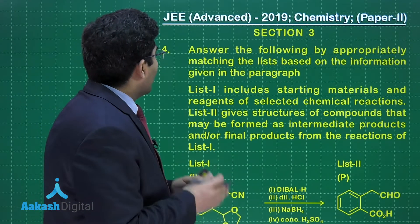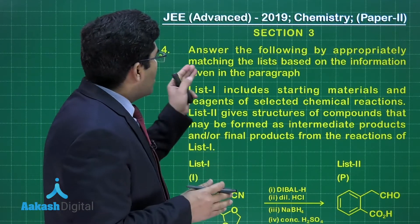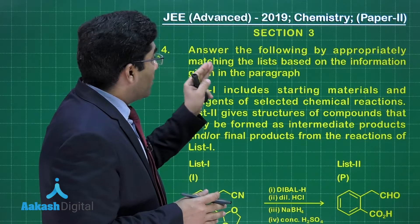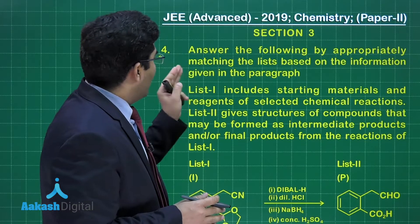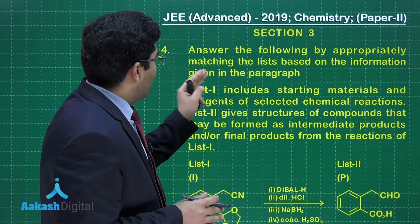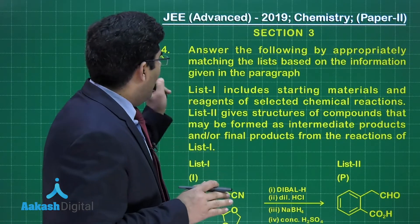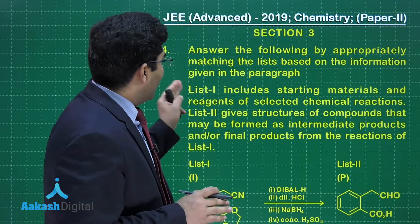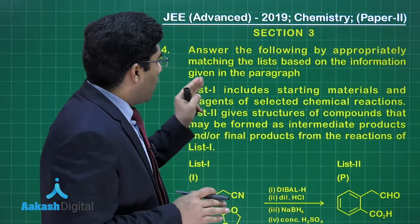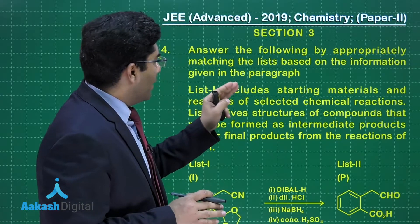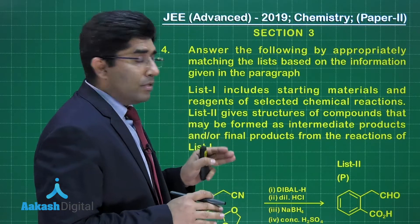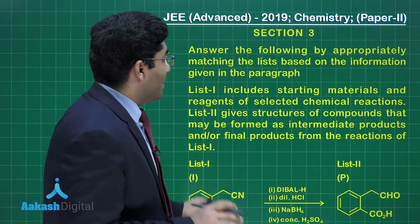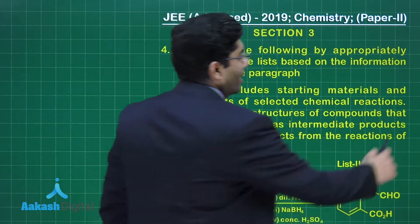In this question, we are asked to answer by appropriately matching the list based on the information given in the paragraph. List 1 includes starting materials and the reagents of selected chemical reactions — meaning List 1 gives you the reagents and the reactants.